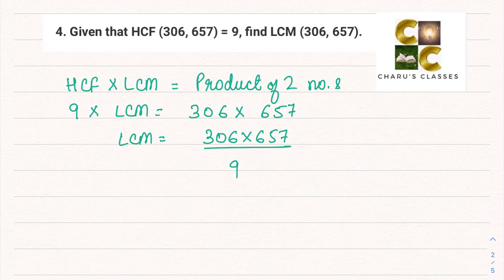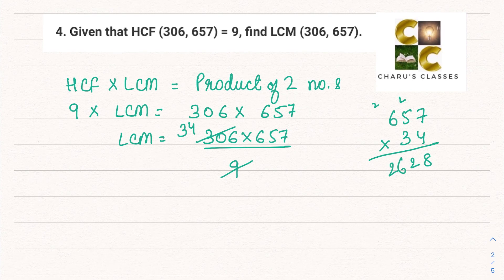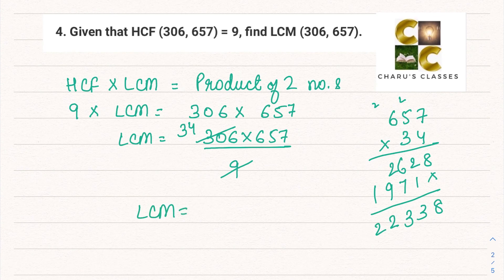So we divide 306 by 9. Nine threes are 27, and 36, that is four 9s. So this is coming to 34 × 657. Let's multiply. So our LCM in this case is 22,338.